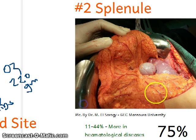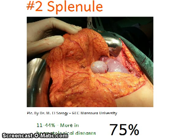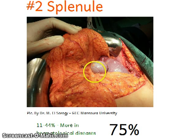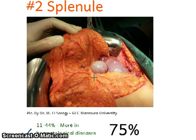The next topic is the splenule — an accessory spleen that grows outside the main bulk or tissue of the spleen. It's a really not uncommon finding in an operative field, occurring in 11 to 44% of cases, and more commonly in hematological disorders. This is very important because missing a splenule in hematological disease means the patient will not improve. In a ruptured spleen, missing a splenule is okay, but in hematological disease you should search for splenules and remove them.